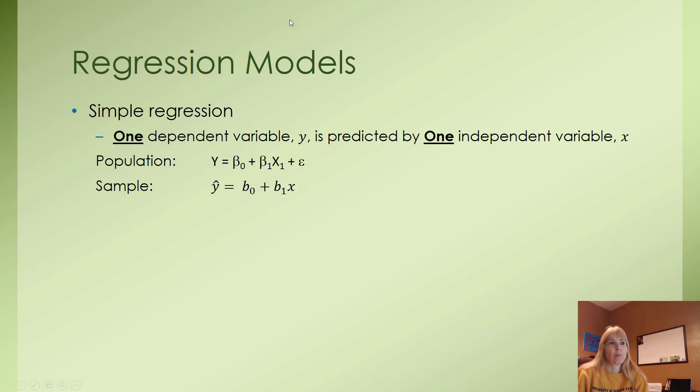It was predicted by one independent variable. This is what our model looked like, whether population or sample. Our β₀ or b₀ was our intercept, and then our one independent variable would have the slope. This is your normal simple regression model.